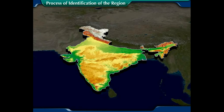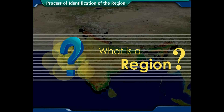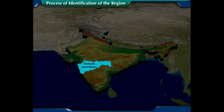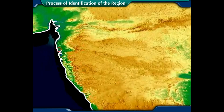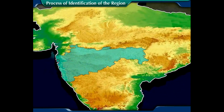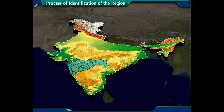Let's begin with the process of identification of the region. What is a region? The answer is very simple — a small portion of a vast land is called a region. But at the same time, it is not as simple as it looks, because neither is there any limit to how vast an area can be, nor to how small a part can be.